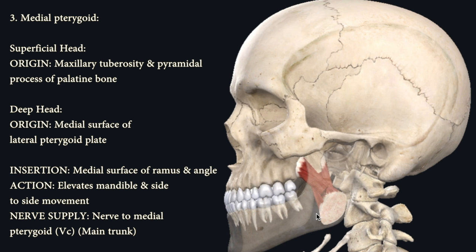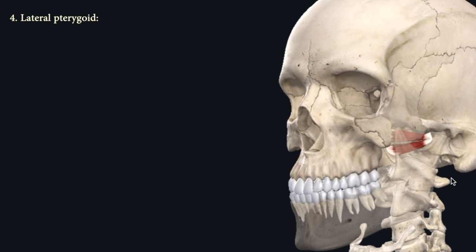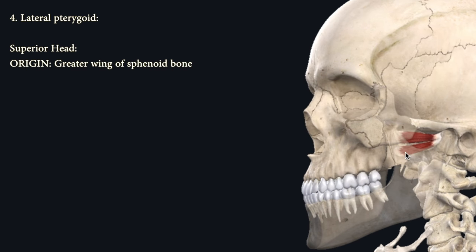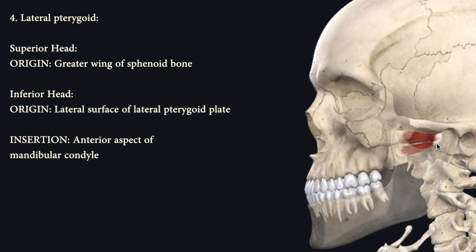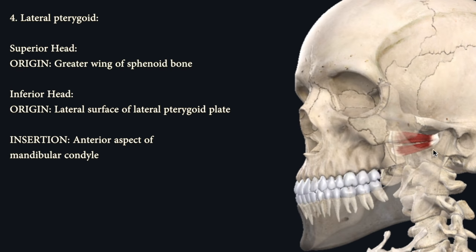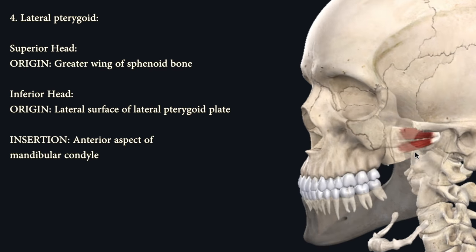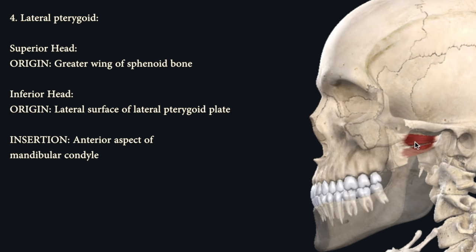The specific nerve is the nerve to medial pterygoid. Number four is the lateral pterygoid muscle, which also divides into two parts: the superior part and the inferior part. The superior part originates from the greater wing of the sphenoid, and the inferior part originates from the lateral surface of the lateral pterygoid plate. Both parts insert into the anterior surface of the mandibular condyle — on this model the condyle is faded to help you see the muscle more clearly, but they converge and insert into the mandibular condyle.